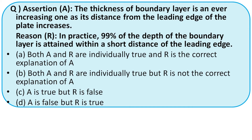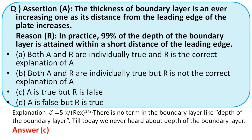Assertion: the thickness of boundary layer is ever-increasing as its distance from the leading edge of the plate increases. Reason: in practice, 99% of the depth of the boundary layer is attained within a short distance of the leading edge. Options: both A and R true and R explains A; both true but R not correct explanation; A true but R false; A false and R true. The first statement is correct, but there is no term called 'depth of boundary layer.' So the right option is option C.